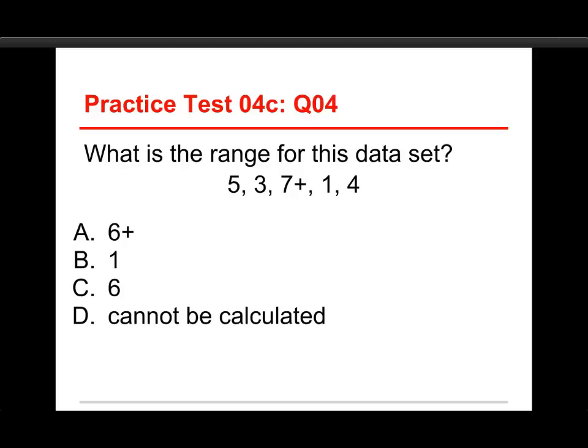All right, number four. What is the range for this data set? And we've got 5, 3, 7 plus, 1, and 4. And the choices are 6 plus, 1, 6, or cannot be calculated. Well, the answer is that it cannot be calculated, and here's why.